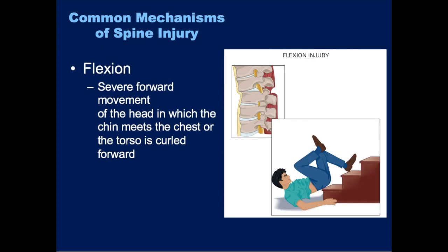A flexion injury is when there's severe forward movement of the head, where the chin is pushed down and meets the chest, or if the torso is excessively curled forward. You can see how this tears some of the connecting ligaments and injures the spinal cord.